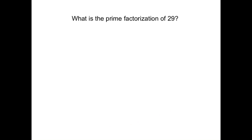All right, here's another one. What is the prime factorization of 29? Well, we already said that 29 is prime. So, it's finished. The only way to multiply to make 29 is 1 times 29. The prime factorization of 29 is only 29.